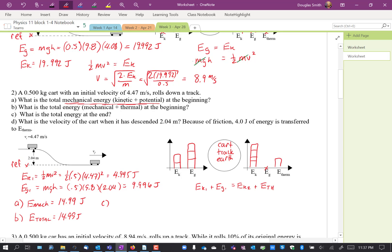Okay, question C. What is the total energy at the end? Okay. Total energy in a system never changes. Conservation of energy. E-total is the same at the end as it was at the beginning. It's 14.99 joules. D. What is the velocity of the cart when it is descended? It says the thermal energy, four joules is transferred to thermal.